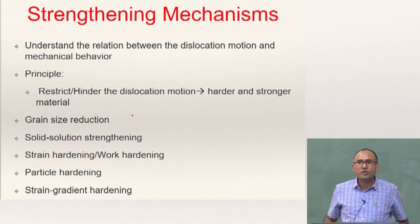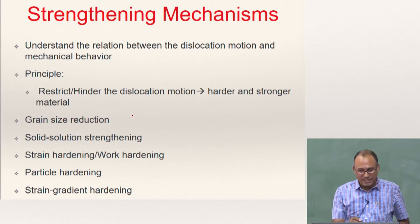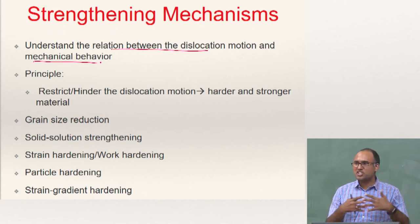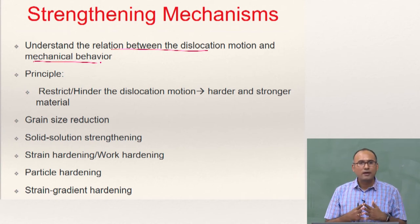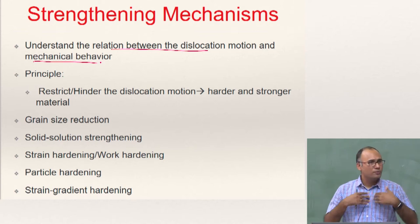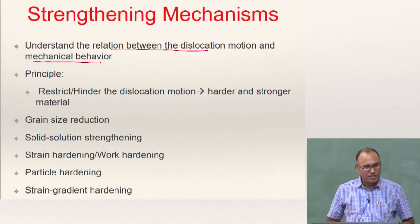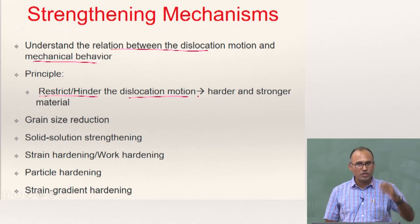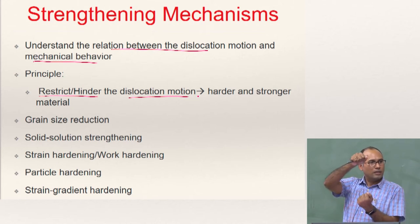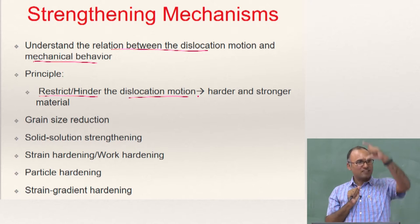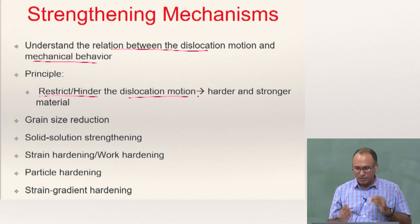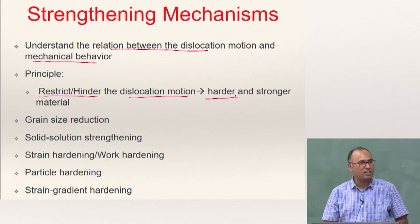In order to understand strengthening mechanisms, the most important thing is to understand the relationship between dislocation motion and the mechanical behavior of the material. The moment we understand the connection between dislocation motion and mechanical behavior, we reasonably understand the various strengthening mechanisms. The basic principle is to restrict or hinder the dislocation motion. If you restrict dislocation motion, it becomes harder to impart plastic deformation, and as a result the yield strength of the material increases — that is what strengthening means. All you need to do is restrict dislocation motion.